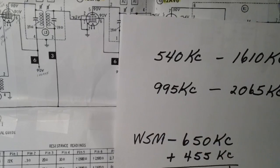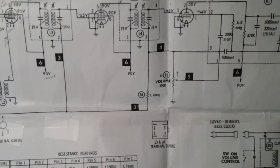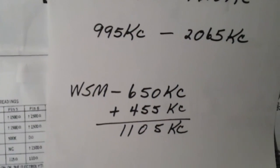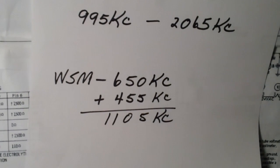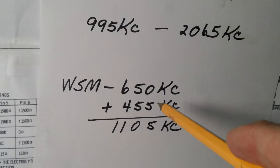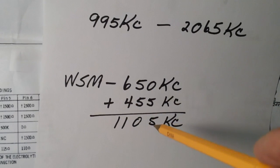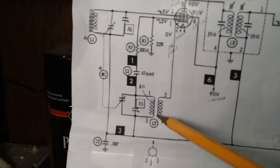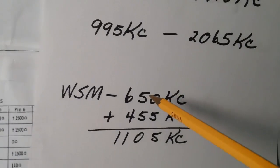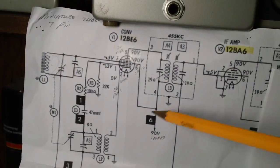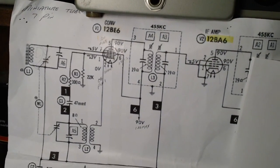In this case the IF is printed right above each of the IF cans on the schematic — 455 kC. We tuned in WSM out of Nashville at 650 kilocycles. We add 455 kilocycles to get 1105 kilocycles — that's what's being mixed into this tube from the local oscillator. So we have 650 coming in on the antenna and 1105 coming from the oscillator, both being mixed in the frequency changer converter.